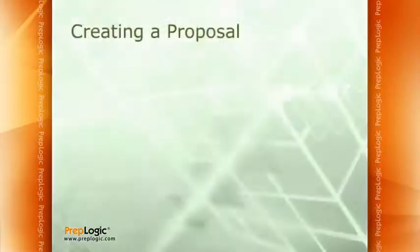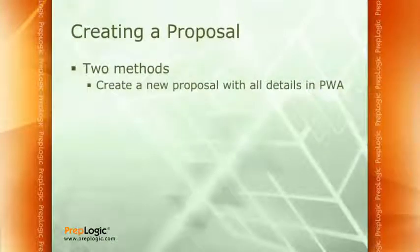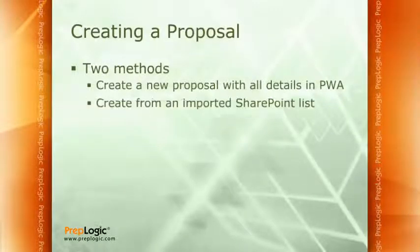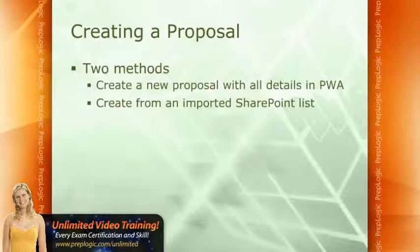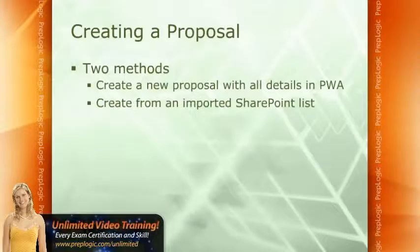So how do we go about creating a proposal? There are two different methods. One is to create a new proposal with all the details in PWA. The second is, if you have Windows SharePoint Services, you can create it from an imported SharePoint list. If you were having some collaboration out on the SharePoint site and people were putting in their ideas, you could build a task list, and that task list is what we're talking about importing.